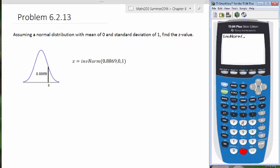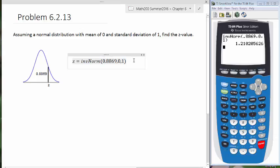0.8869, 0, 1, close parentheses, enter, and then here is our value.